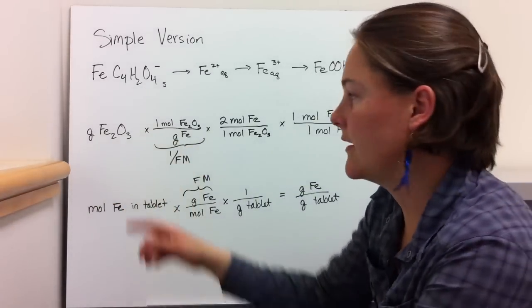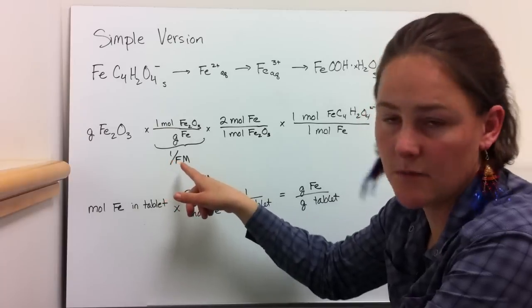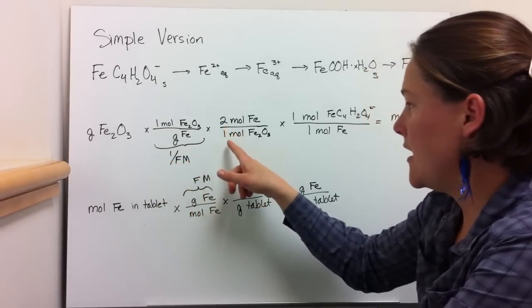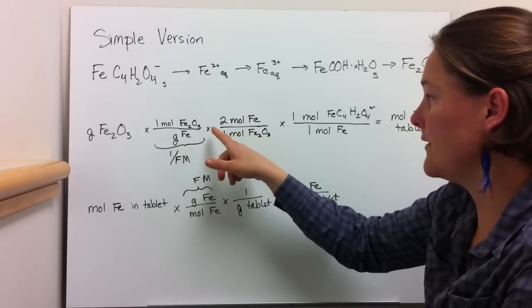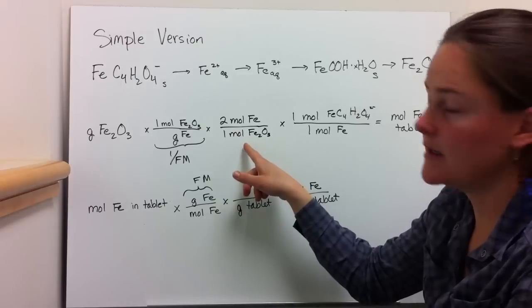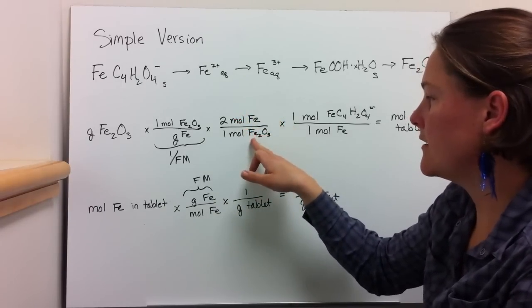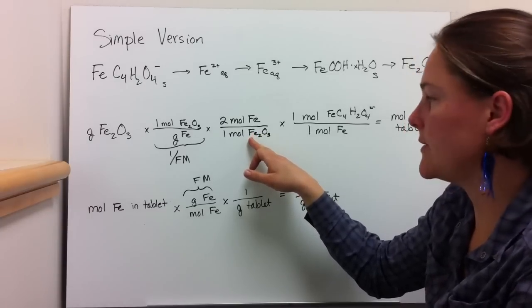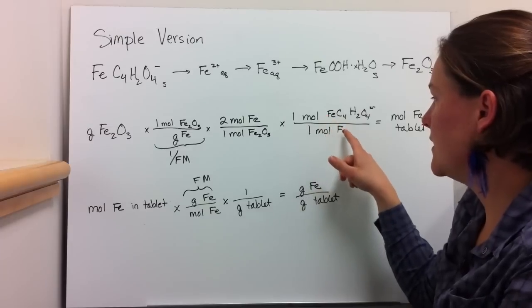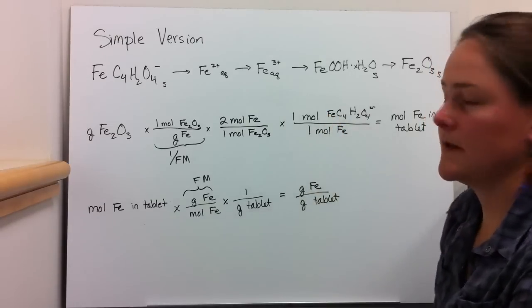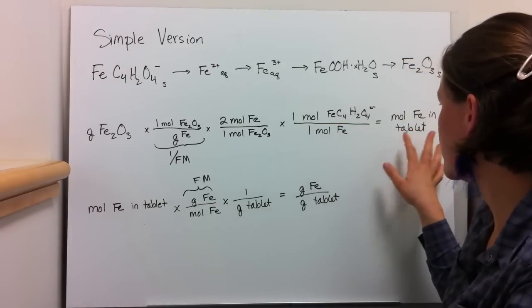This is actually a relatively simple calculation. You take the grams of the hematite divided by the molecular mass, or formula mass, and you end up with moles of hematite. You have two moles of iron per mole of hematite, so you just do the mole cancellation. Then you have one mole of iron per mole of this iron-organic complex.